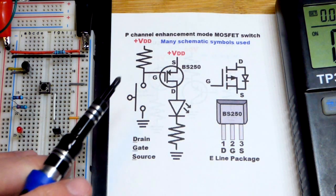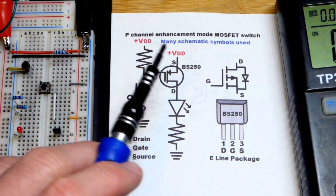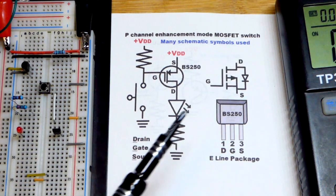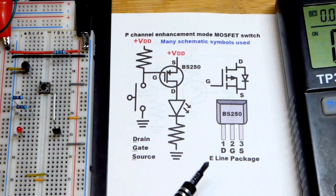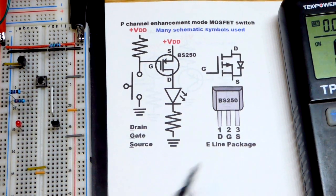In this video we're going to look at the P-channel enhancement mode MOSFET switch. We're going to use the BS250. The ones that I have are in the E-line package, and I don't think I realized that when I bought them from Digi-Key.